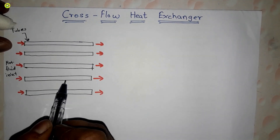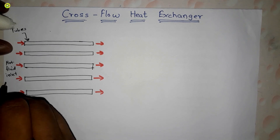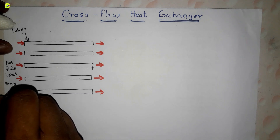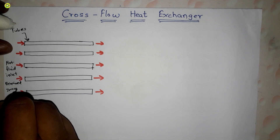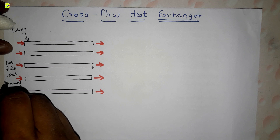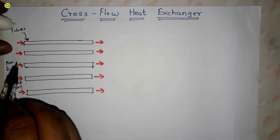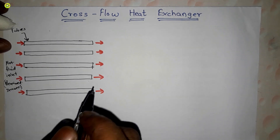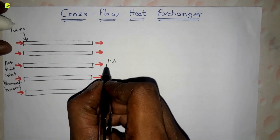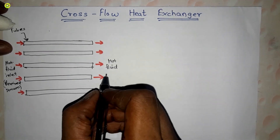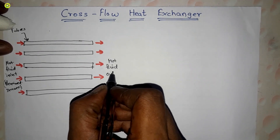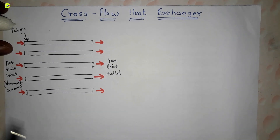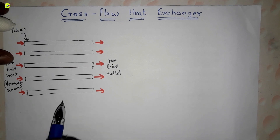The hot fluid is passing in separate tubes, as you can see. That is why it is an unmixed stream — the hot fluid flows in separate tubes from inlet to outlet.